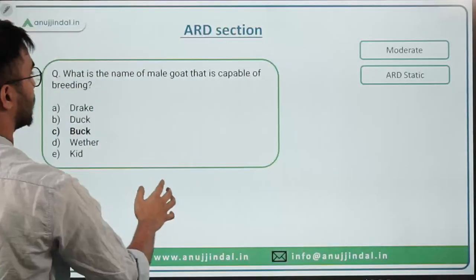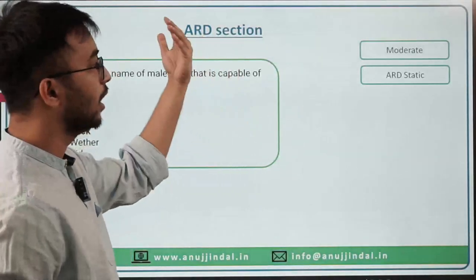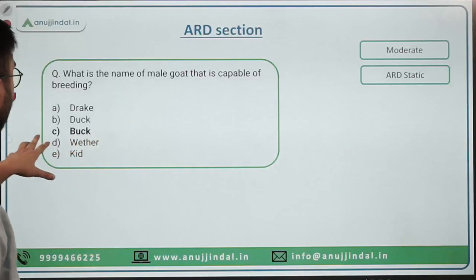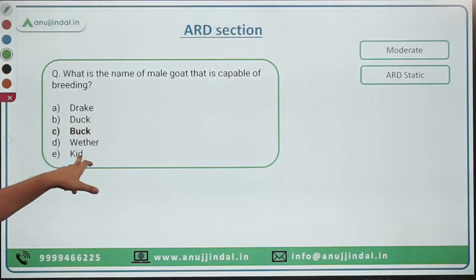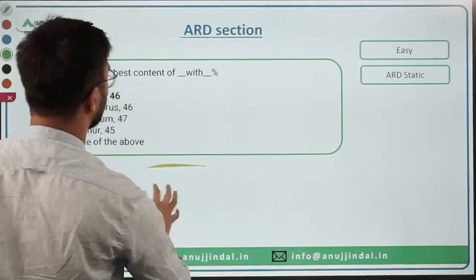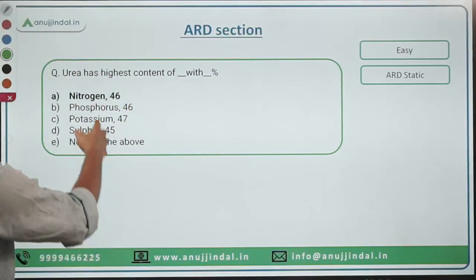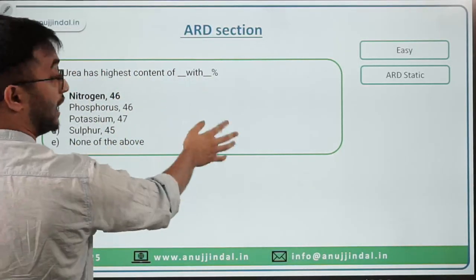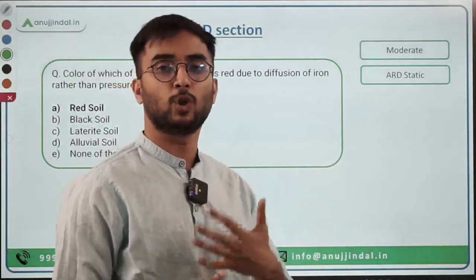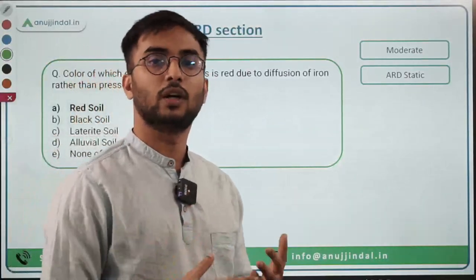'What is the name of the male goat capable of breeding?' — This confused many candidates. Drake is a duck, wether and kid are also goat-related terms, but Buck is the correct answer for male goat. 'Urea has highest content of which nutrient?' — This was a very easy question. Nitrogen at 46% is the highest content in Urea, linked to the Green Revolution where NPK fertilizers and Urea were prioritized.